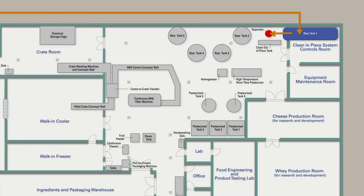After separation, the milk is pumped into Raw Tanks 2 through 5, depending on what the milk is being used for. Raw Tank 2 is for whole milk, Raw Tank 3 is for low-fat milk, and Raw Tank 4 is for skim milk.